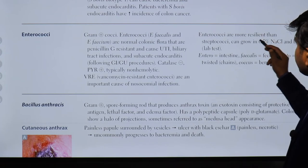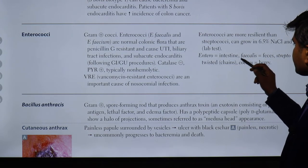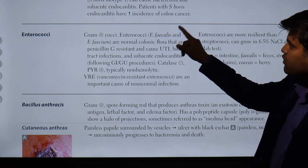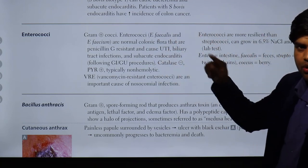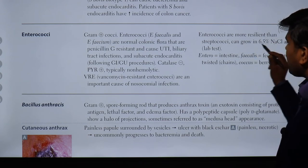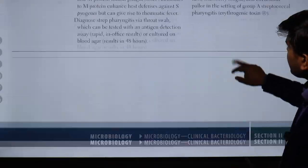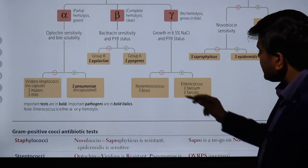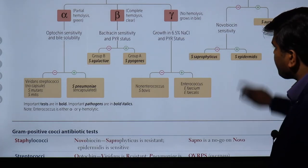Correction: enterococci are more resilient than streptococci and can grow in 6.5% NaCl and bile — this is the enterococci. The previous information stated was incorrect and needs to be corrected. It is the enterococcus species that actually grow in 6.5% NaCl, not Streptococcus bovis. Enterococcus faecalis (intestine) and faecium (feces) are the species. Streptococcus bovis does not grow in 6.5% NaCl, whereas enterococci do.